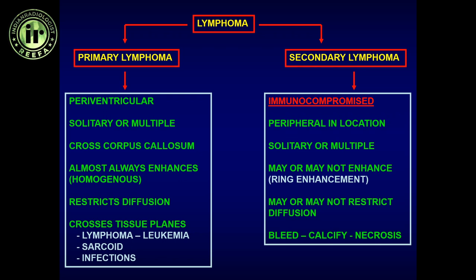It is a mass lesion associated with mass effect, and it almost always enhances. It tends to hug the ventricular lining — typically always touching it — either along the corpus callosum or along the superior periventricular area.